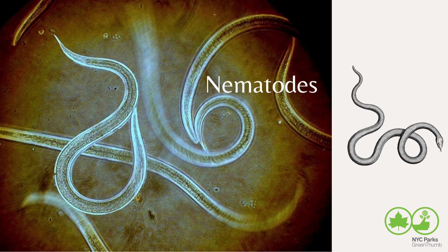Nematodes are often present in soils and are so much fun to encounter under a microscope. They can feed on bacteria, fungi, plant roots, and other organisms. Some nematodes — the root-eating ones — are bad for plants, and you'll know they're present if their roots are knotted and full of strange nodules. The antidote is to release the nematodes that eat other nematodes, which you can purchase online.